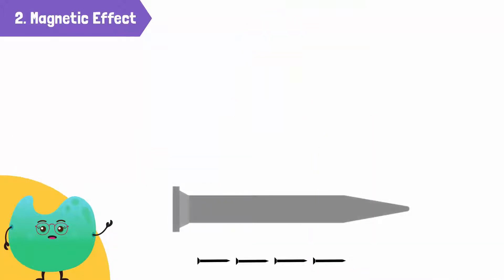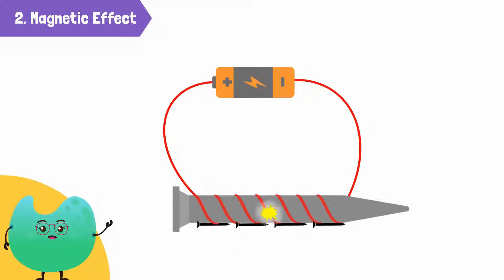A magnetic effect can be produced in a metal, like iron, by coiling a wire around it. The iron nail behaves like a magnet when an electric current passes through it. Magnets like these are called electromagnets.